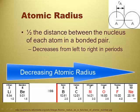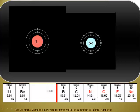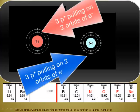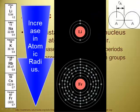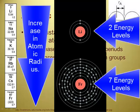Atomic radius decreases from left to right across a period, which doesn't seem intuitive at first because you're adding more protons and more electrons. But a larger positive charge and larger negative charge means a tighter grip — that nucleus is getting bigger, so it holds those electrons tighter. However, as you go from the top to the bottom of a group, atomic radius increases, which makes good sense because you're adding more energy levels, more orbitals, more electron clouds — further away.